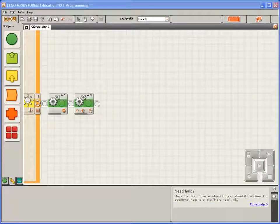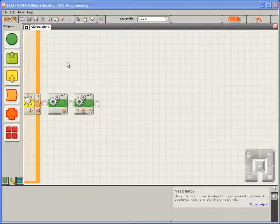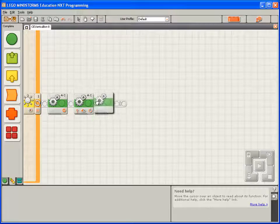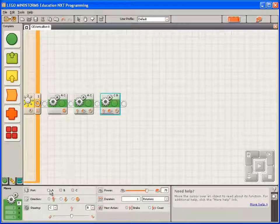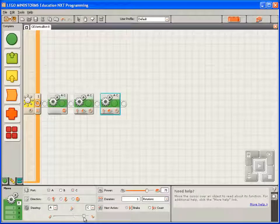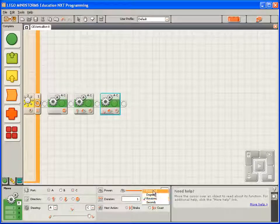We want the robot to rotate until it detects the can in front of it. So I'll drop down another move block. I'll set its motors to A and C. We'll turn up the turn ratio, or the steering, all the way so the robot turns on the spot. And I'll set its duration to unlimited.